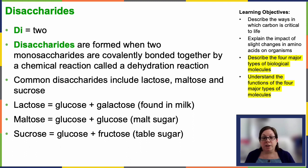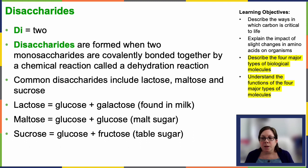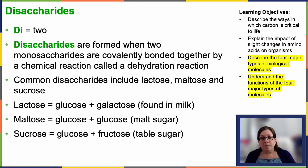Disaccharides — "di" means two — are formed when two monosaccharides are joined together through something called dehydration synthesis. It's named that because you lose a water molecule as you bond them together. Examples of disaccharides include sucrose, or table sugar — like what you might add to tea or coffee — which is made up of glucose and fructose, and then lactose, milk sugar, which is a glucose and a galactose.